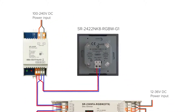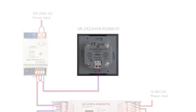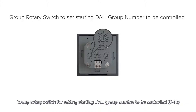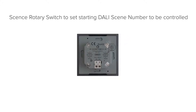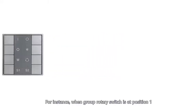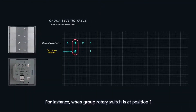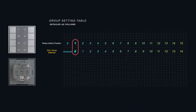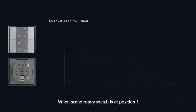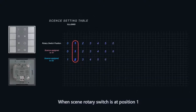Let's go to the demo. Group Rotary Switch for Setting Starting Dolly Group Number to be Controlled. Scene Rotary Switch for Setting Starting Dolly Scene Number to be Controlled. For instance, when the Group Rotary Switch is at position 1, the controller controls Dolly Group 0. Please refer to the detailed group setting table.